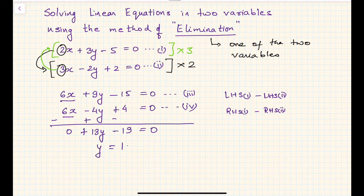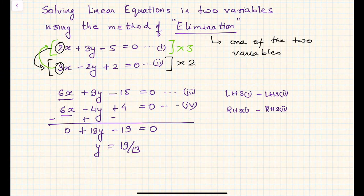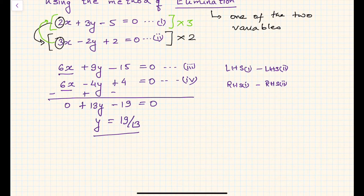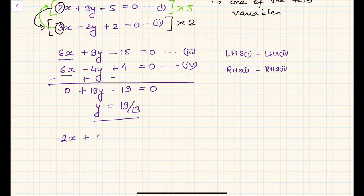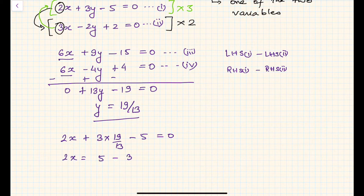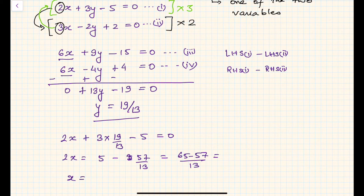So 13y = 19, which gives y = 19/13. Now to find x, we substitute into the first equation: 2x + 3 × (19/13) − 5 = 0. So 2x = 5 − 57/13 = (65 − 57)/13 = 8/13. Therefore x = (8/13) ÷ 2 = 4/13.